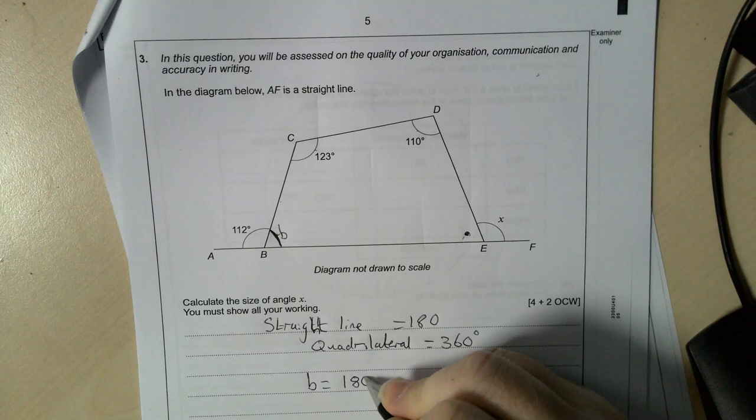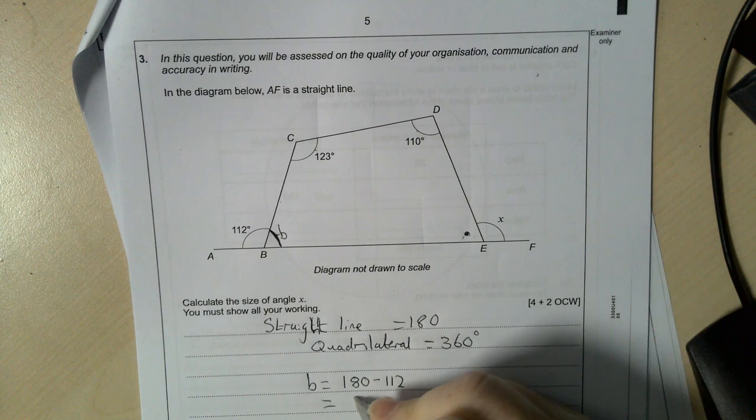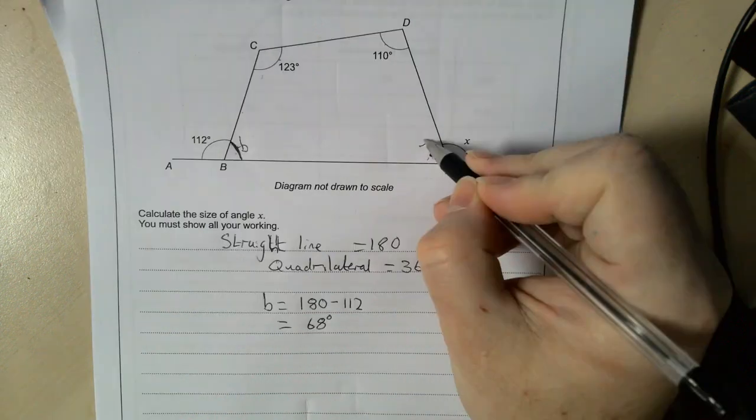180 take away 112, which is 68 degrees. It's a calculator paper, so you'll have your calculator there to work that out.